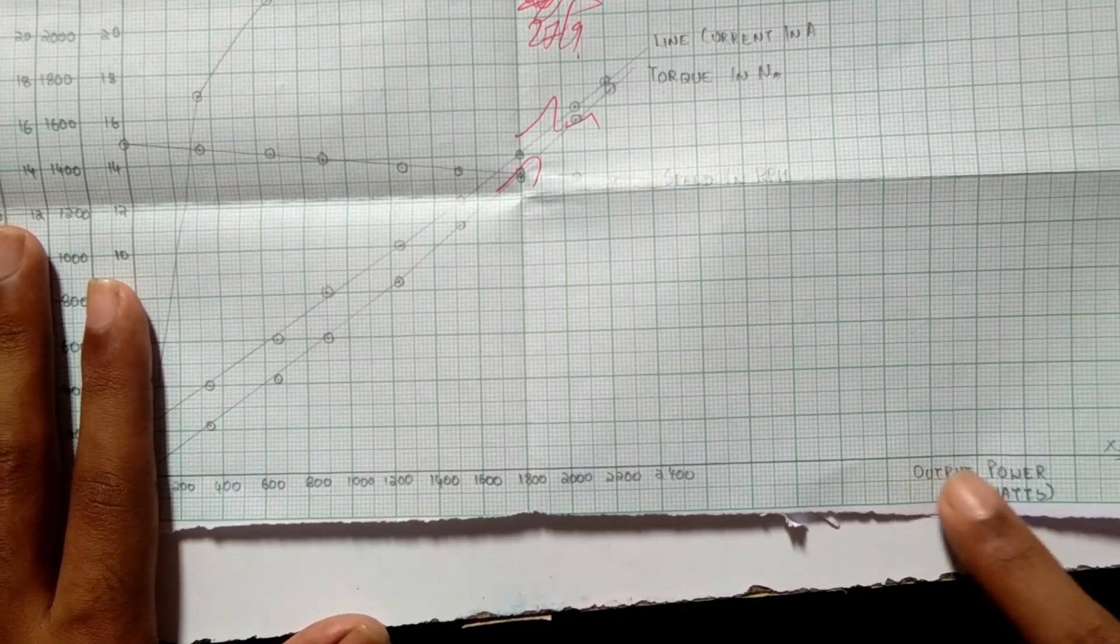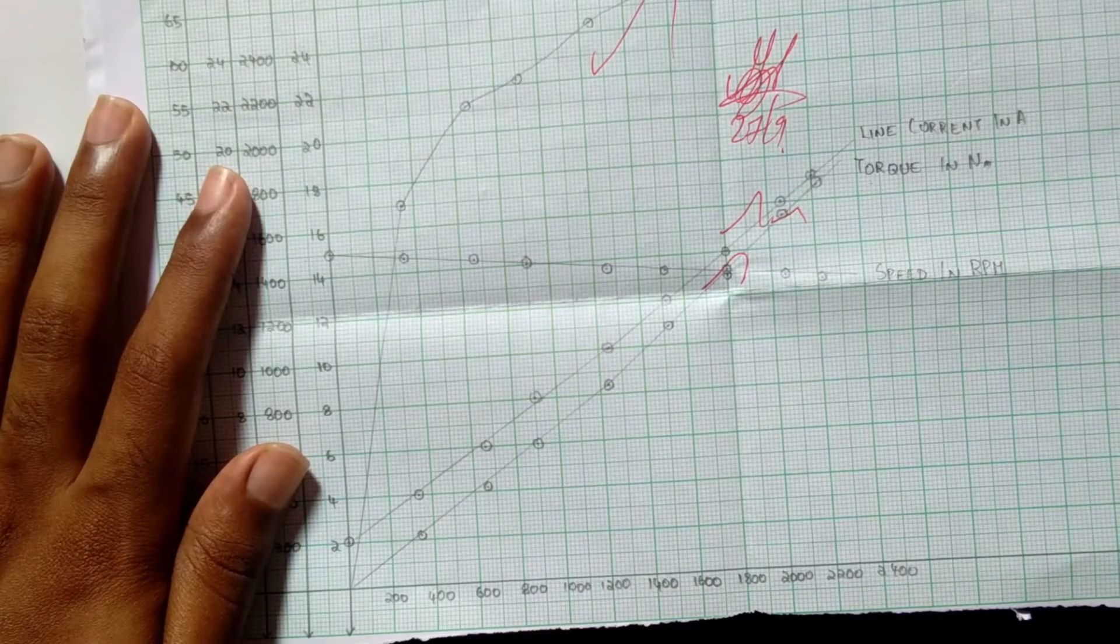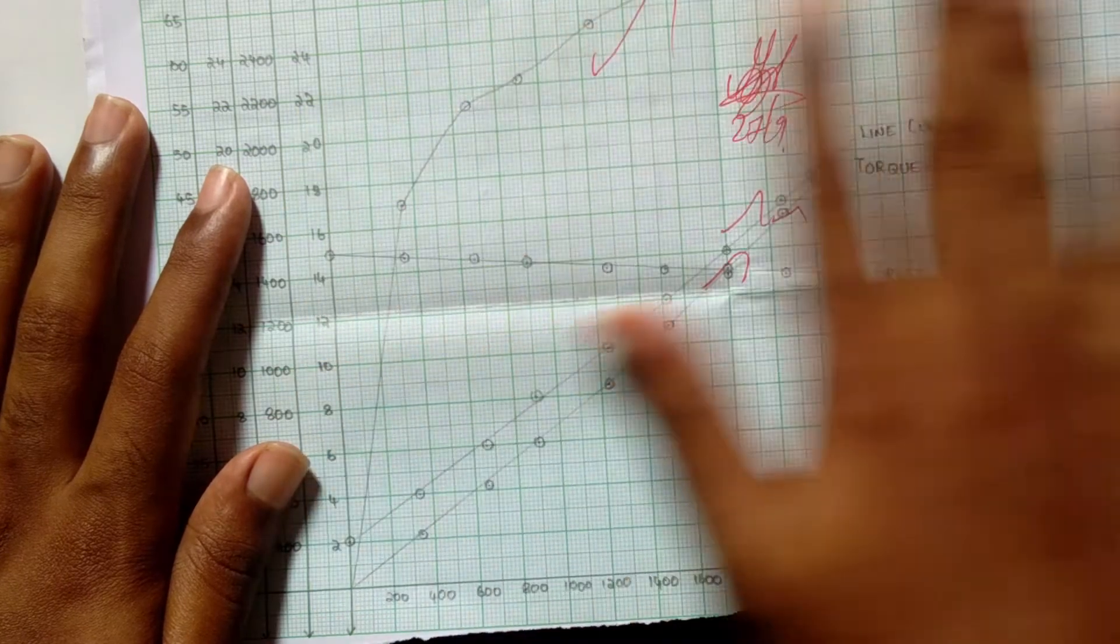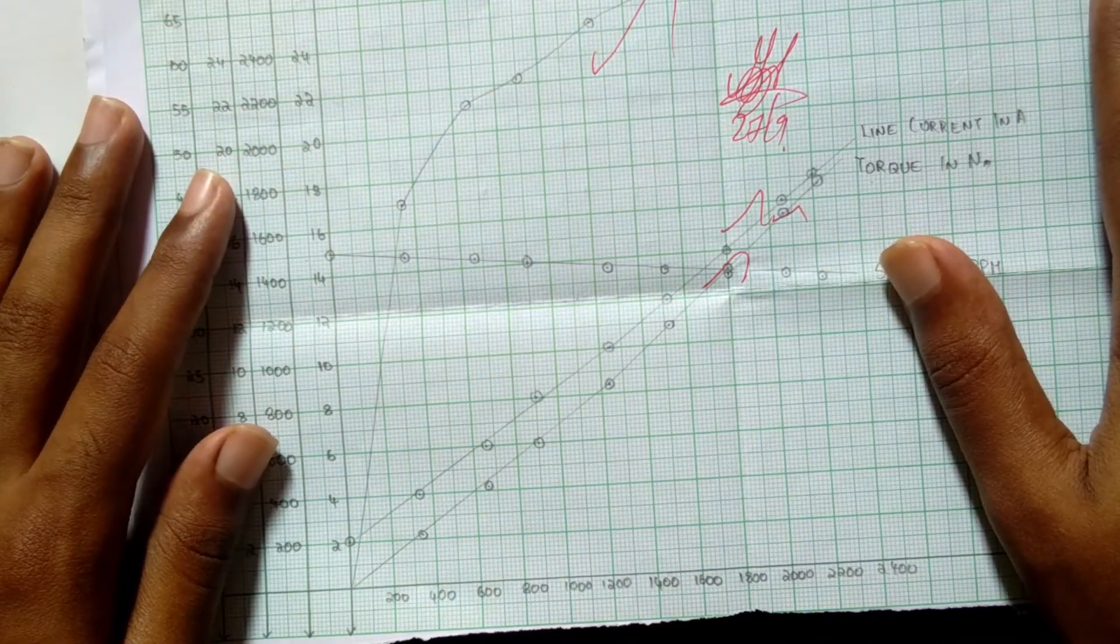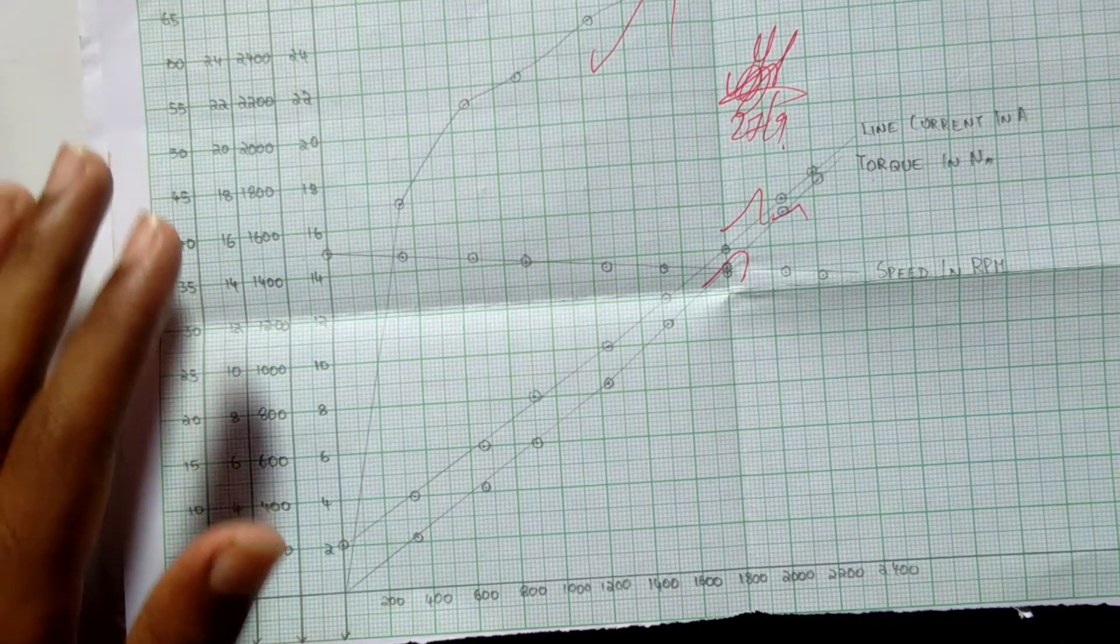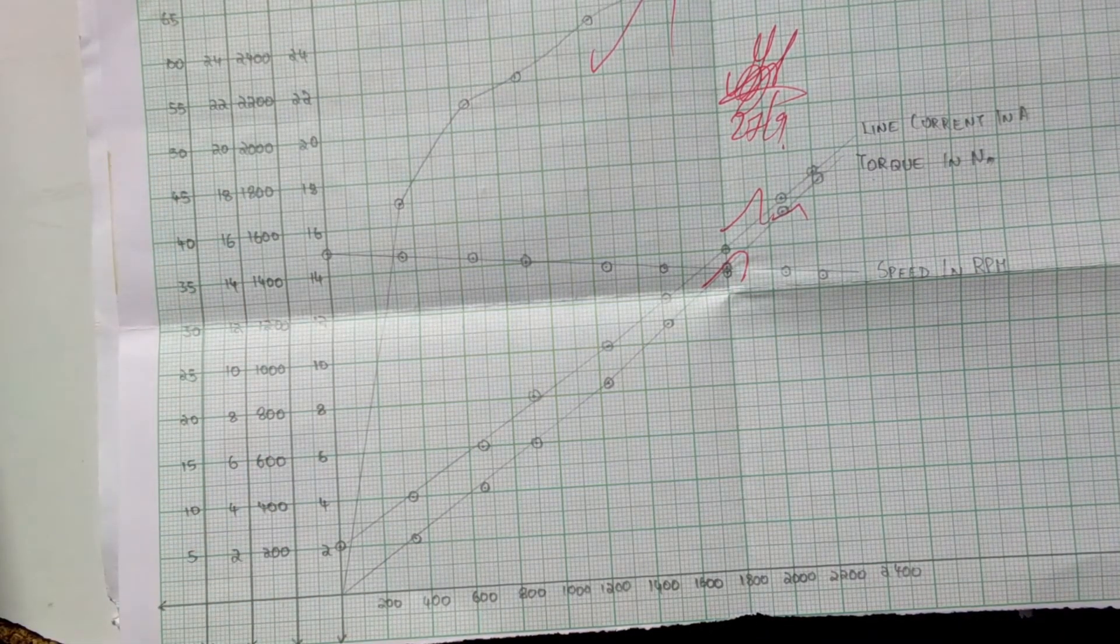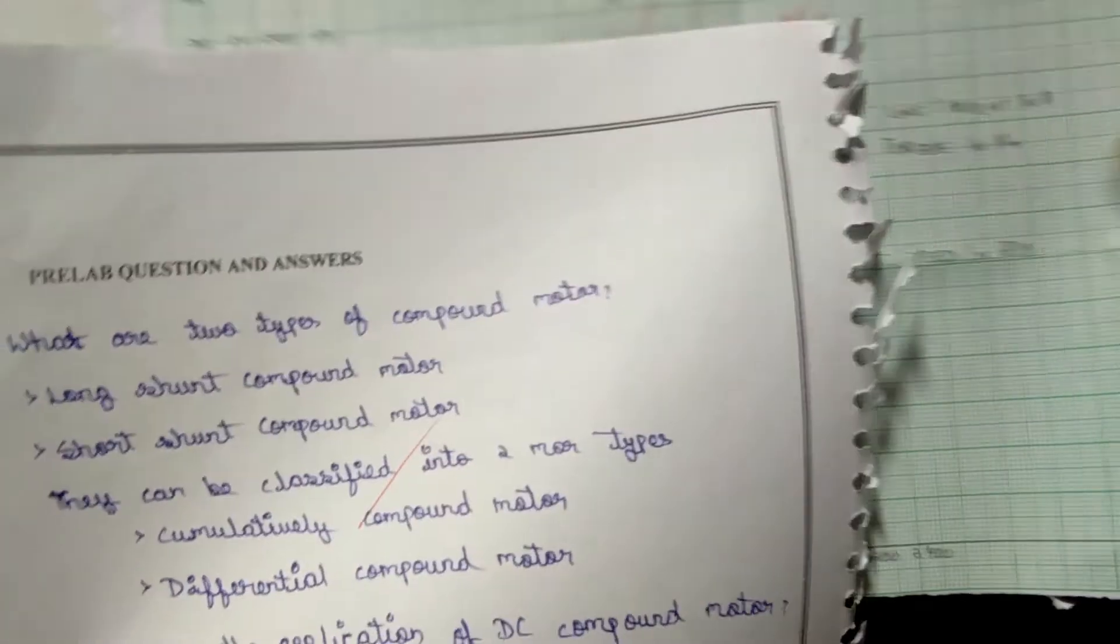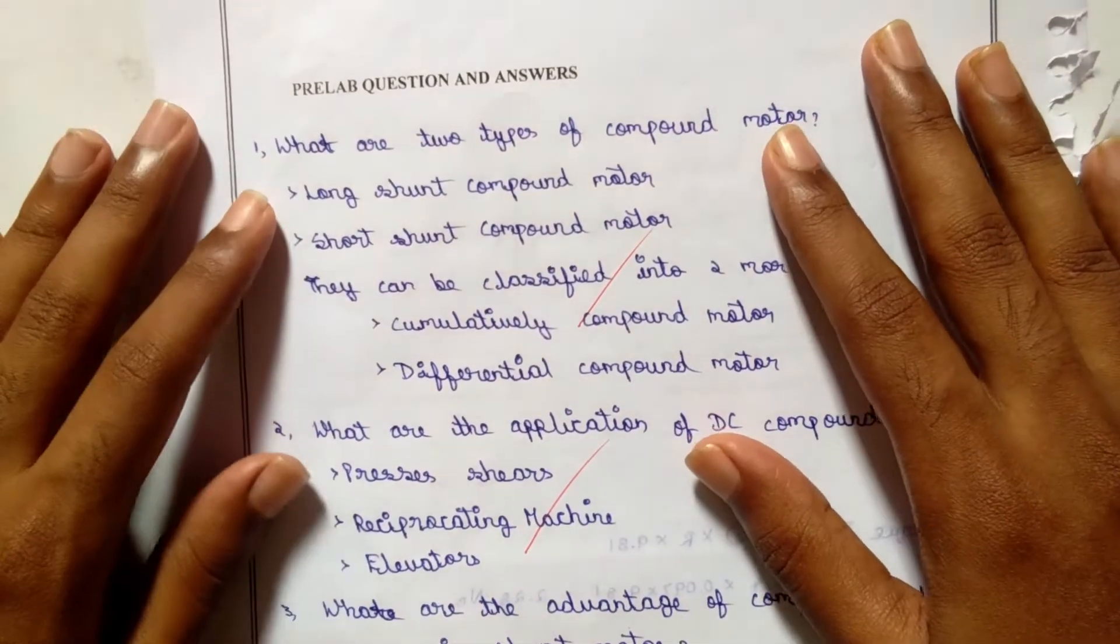This is the final graph. After drawing these two graphs, the experiment is over. But if you wish to see questions for viva, I'm showing here.